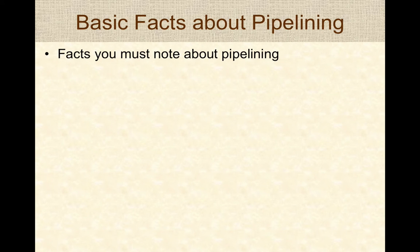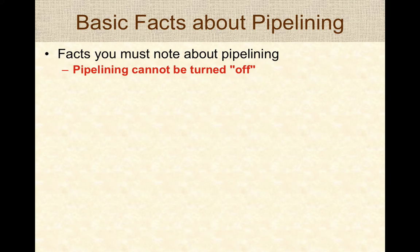Key facts about pipelining: first, pipelining is part of the hardware and cannot be turned off. It is built into the CPU from the ground up, and the only thing software engineers and programmers can do is learn about the pipeline and design programs to work with it efficiently.